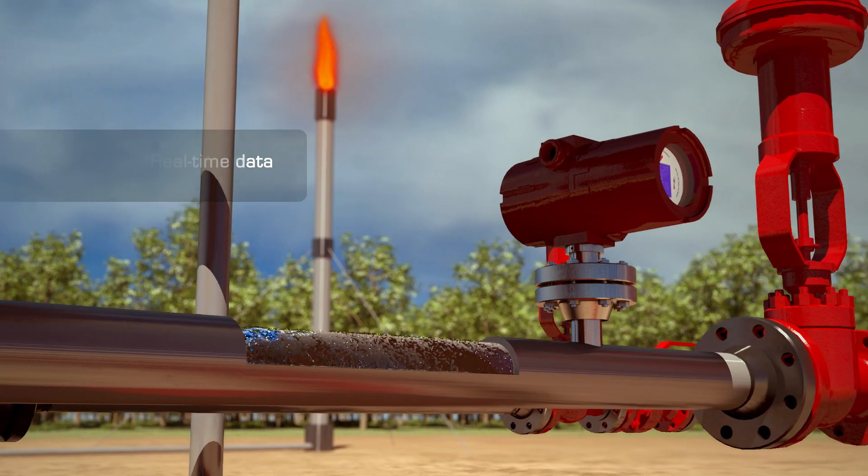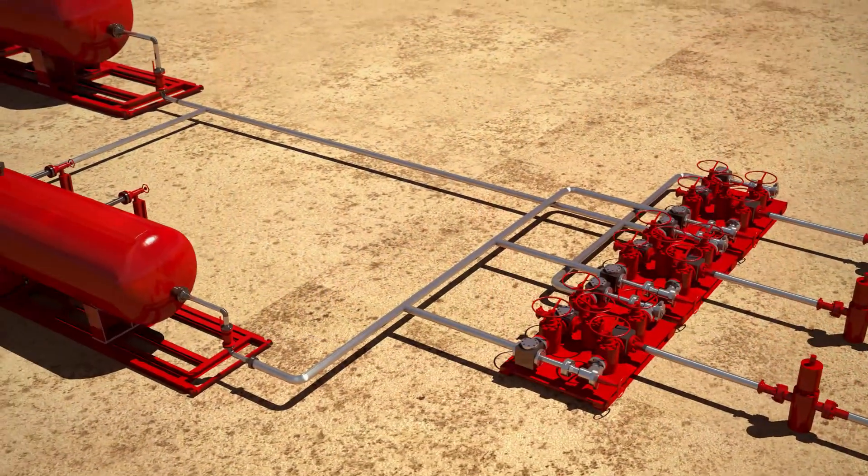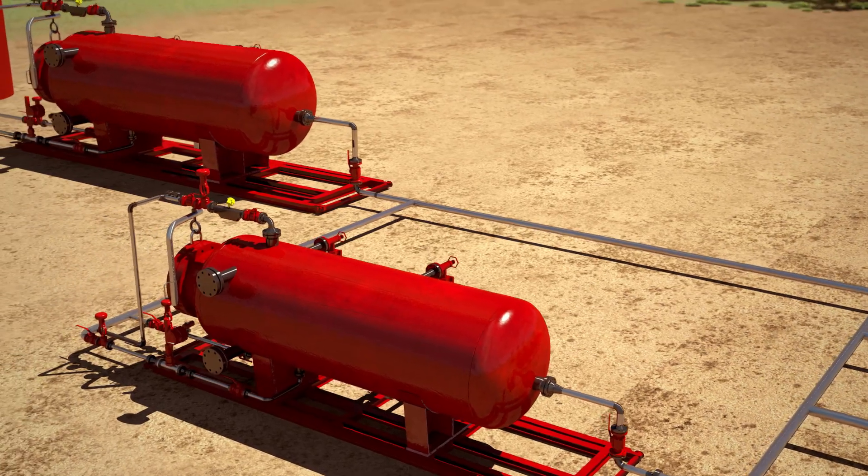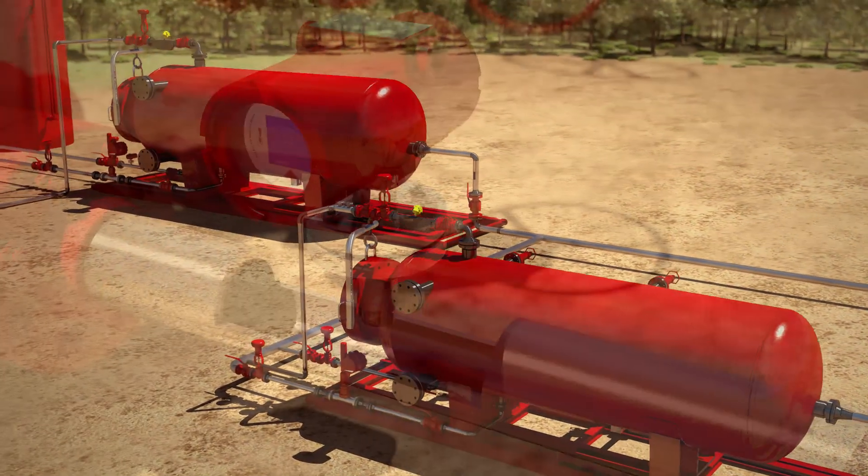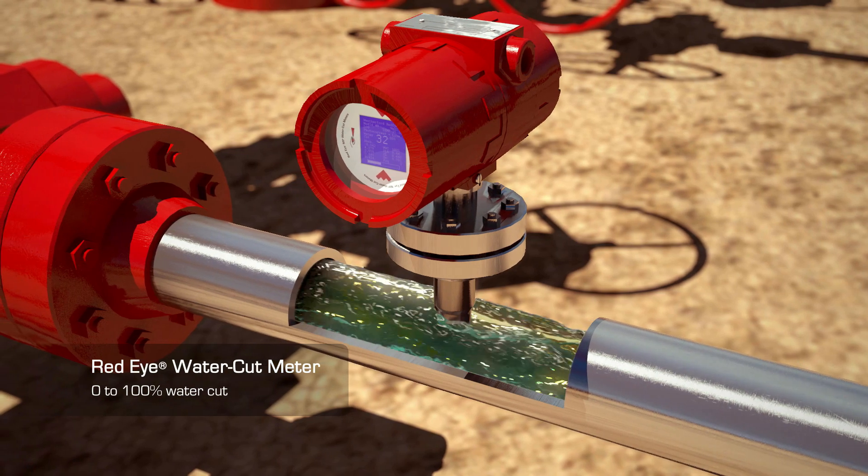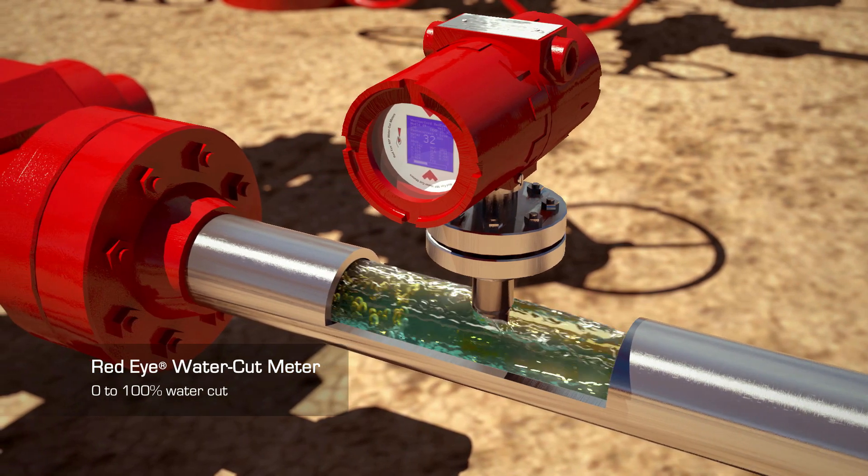Our industry-exclusive technologies begin with detecting and tracking water cut in real-time. Installed on the wellhead or downstream of a test separator, our REDEYE water cut meters use the near-infrared spectrum to detect the full range of water cut from 0 to 100%.